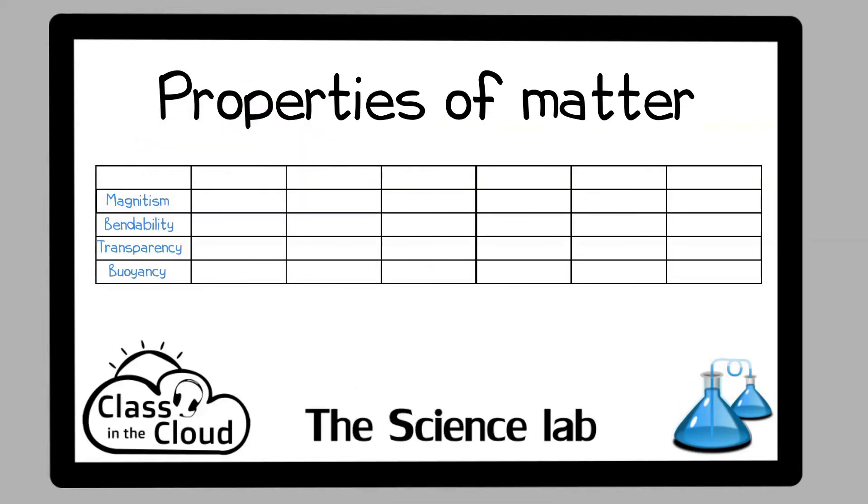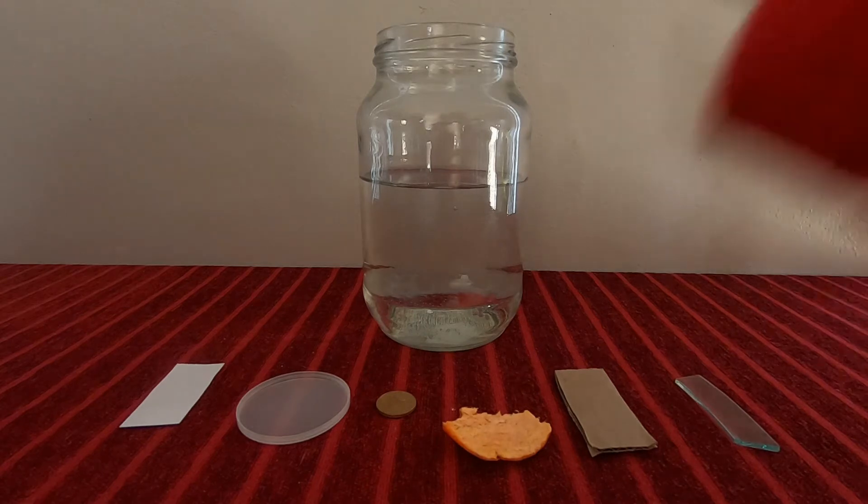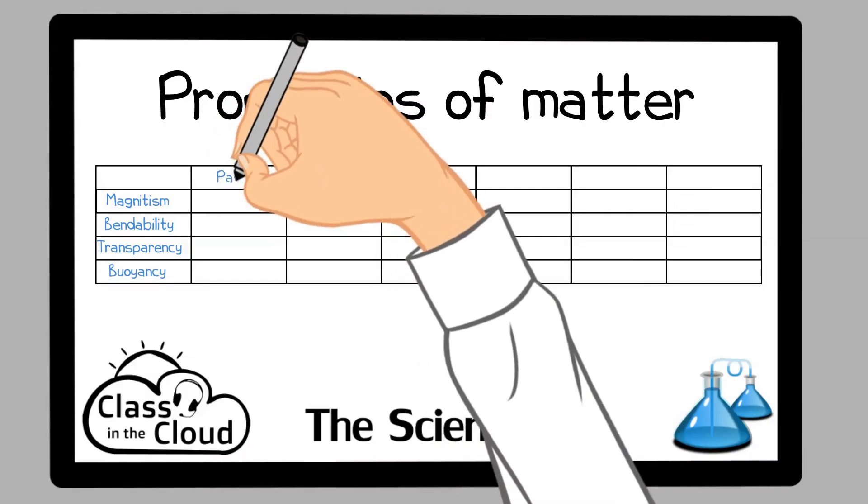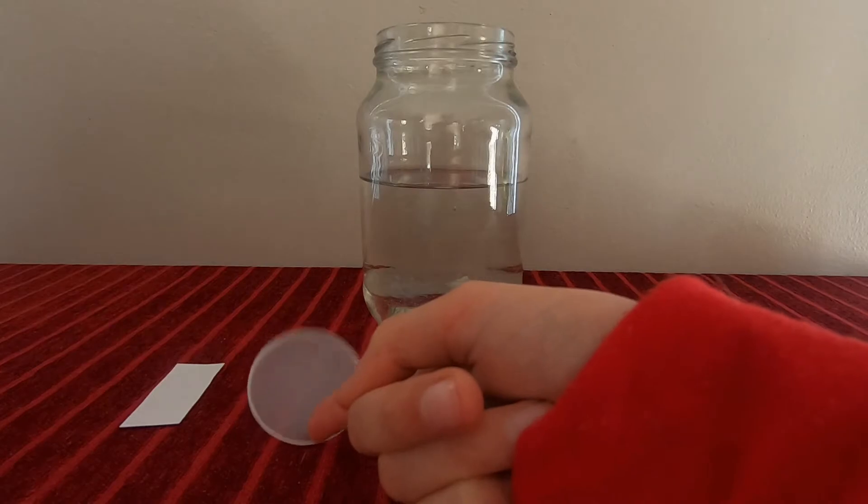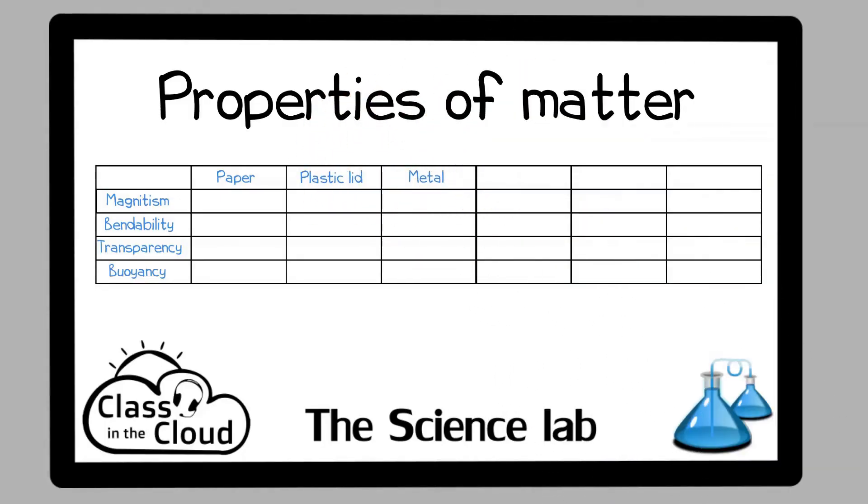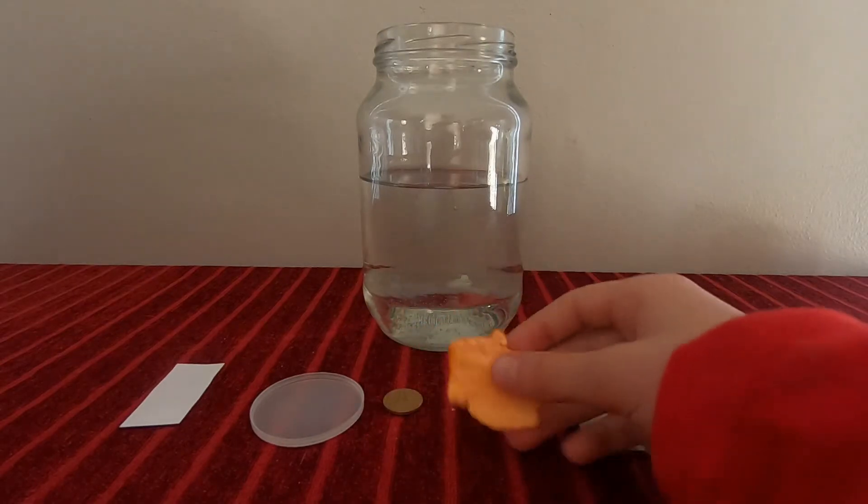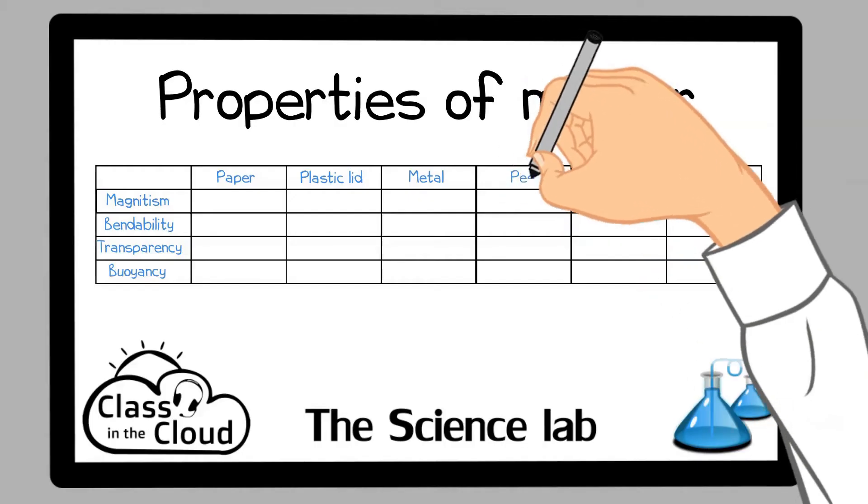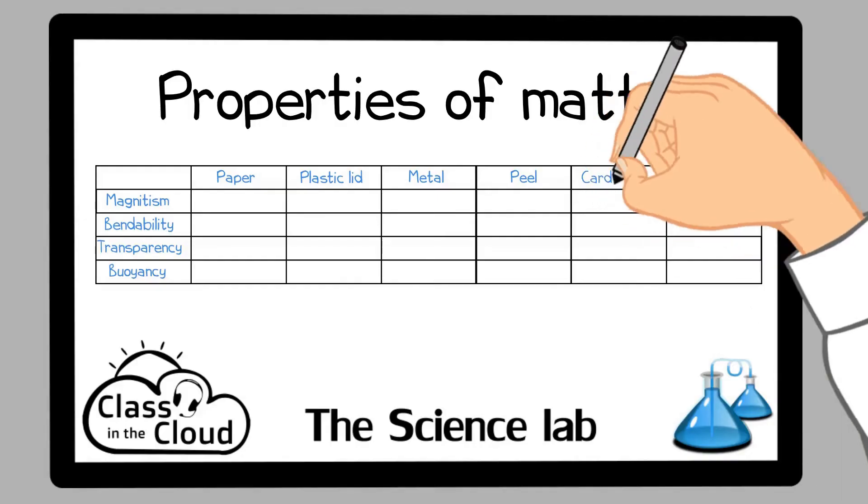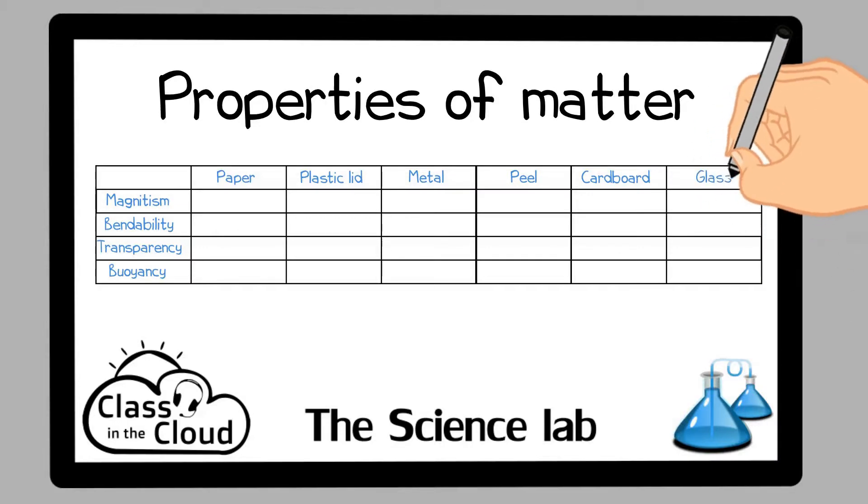So what do we need for this experiment? We need a piece of paper, a plastic lid, any type of metal—in this case we're using a 20 cent coin—a mystery peel, cardboard, and a piece of glass. Guys, if you know what the mystery peel is, write in the comments down below.